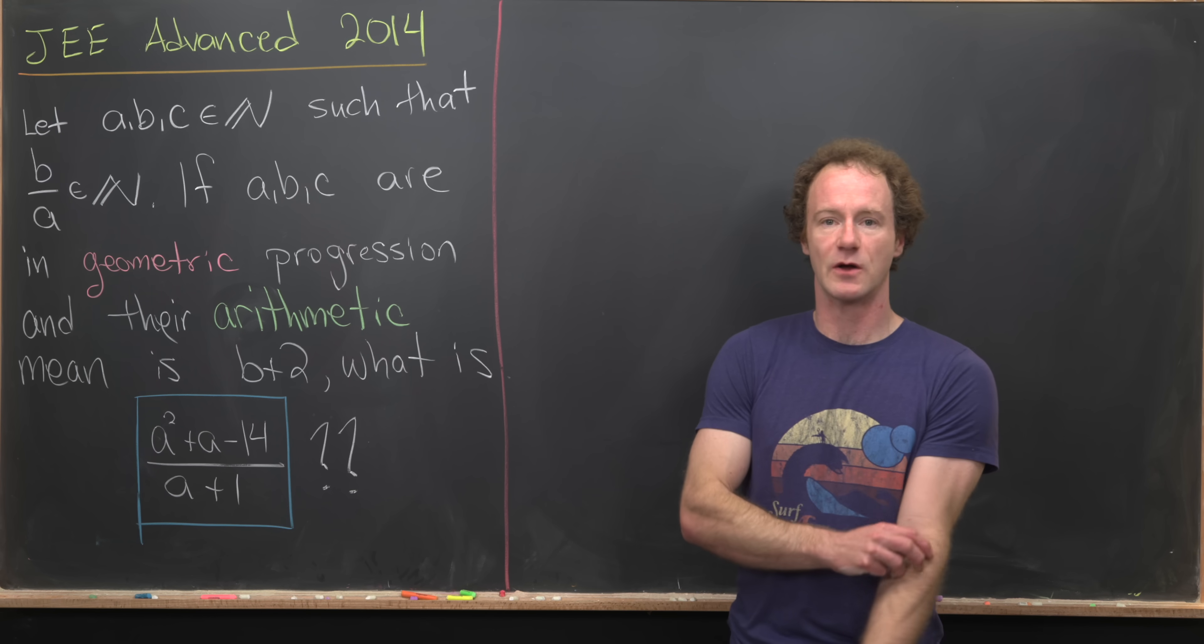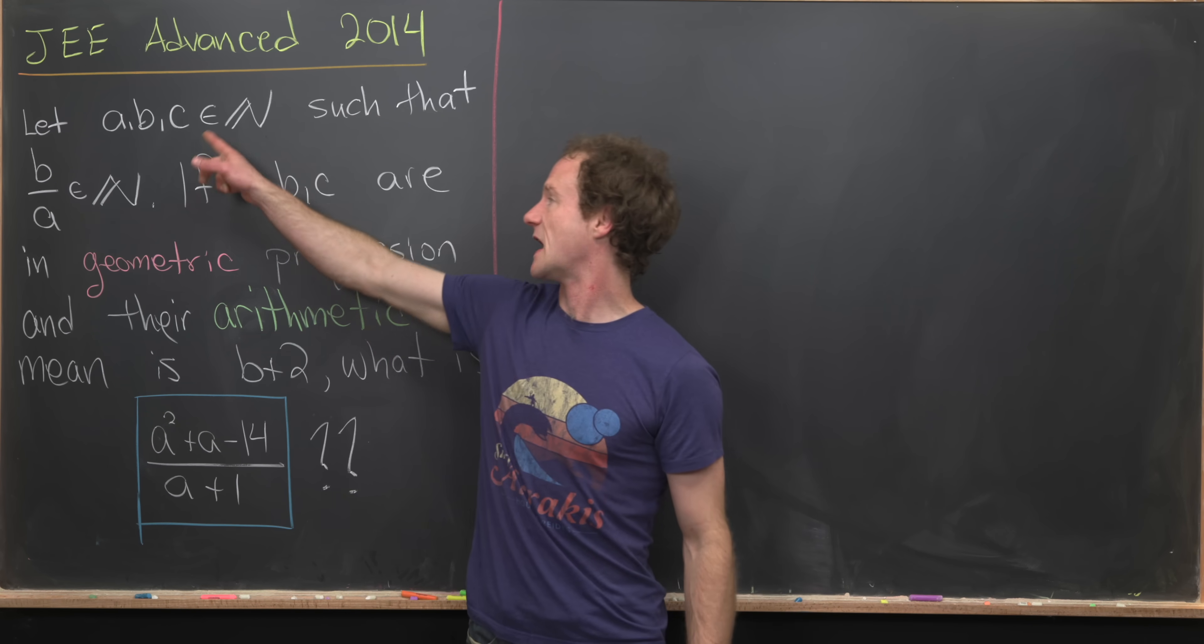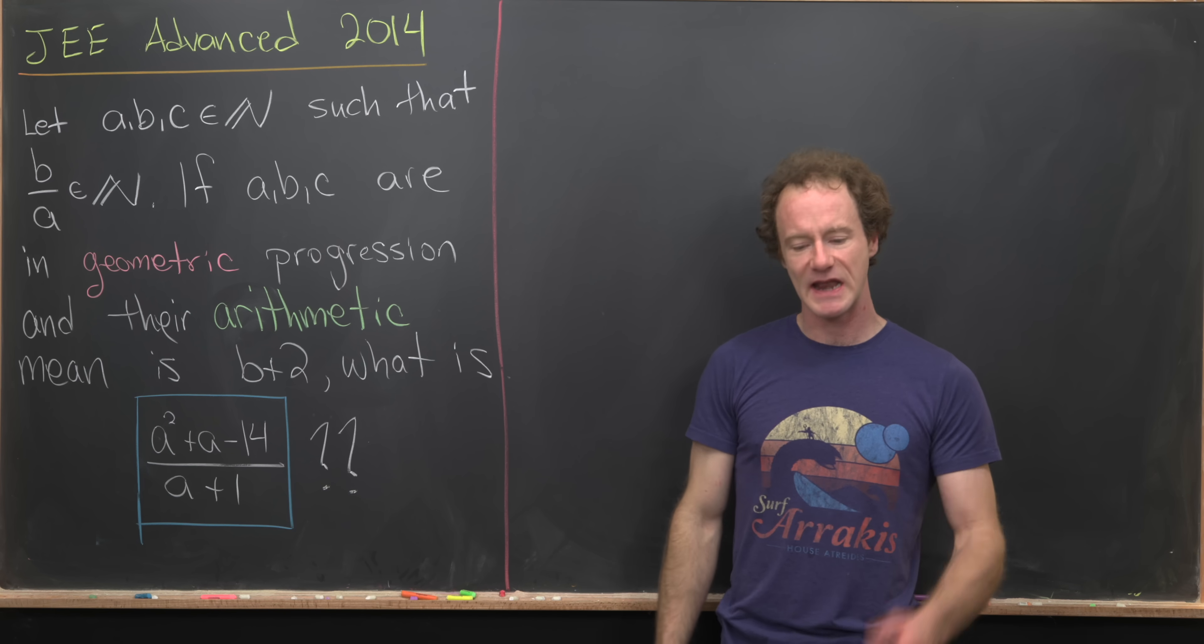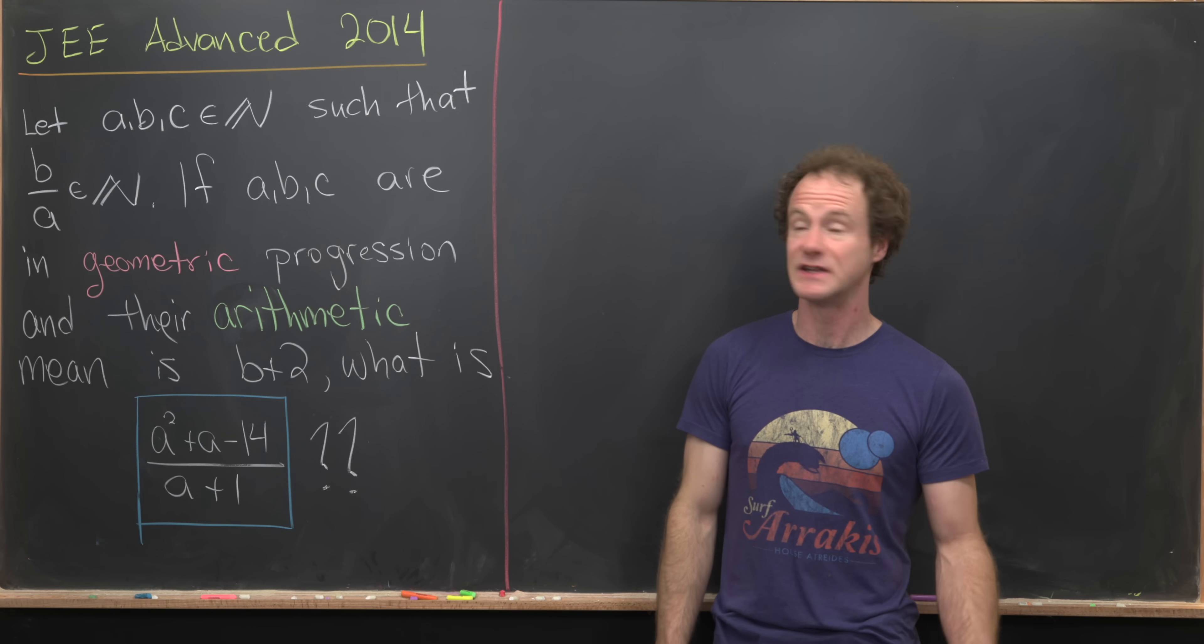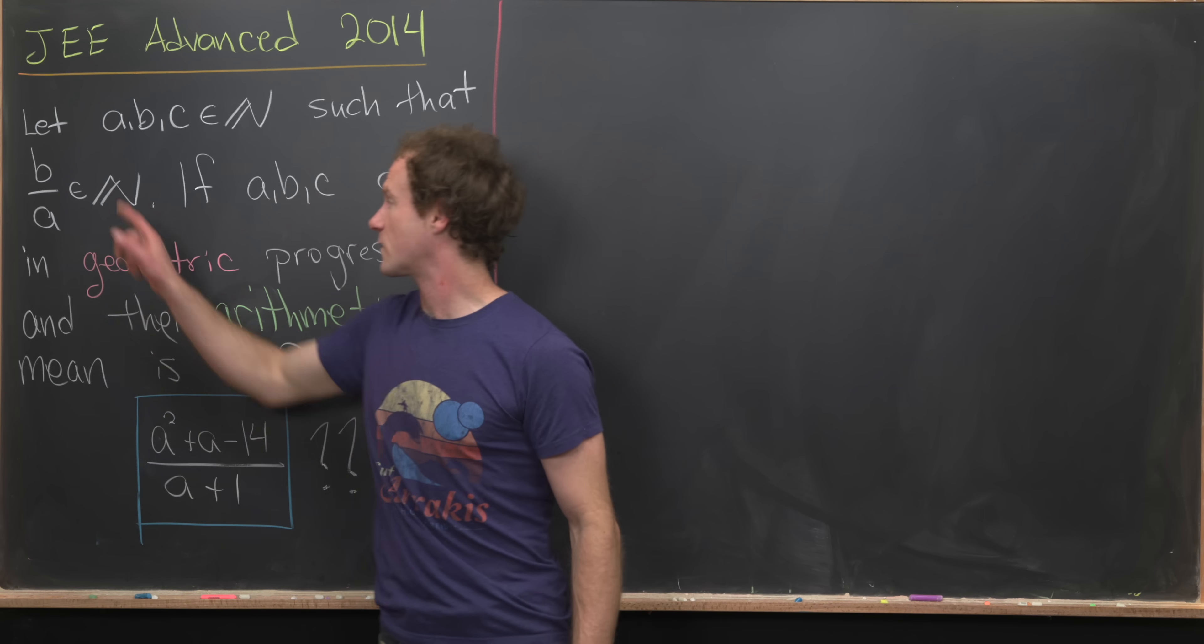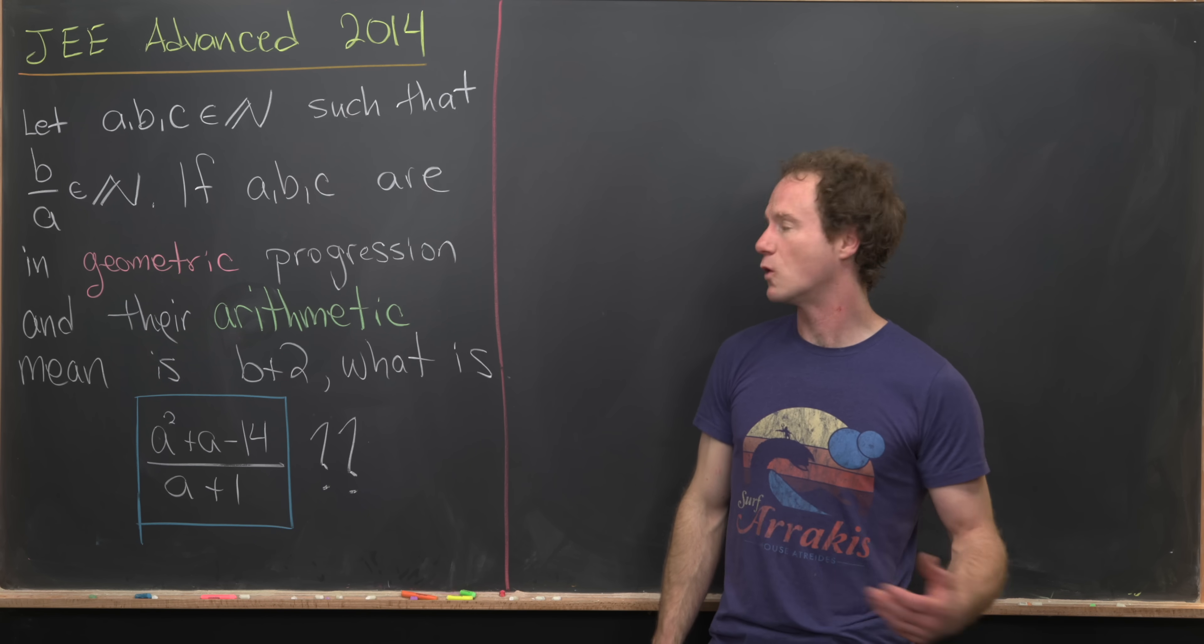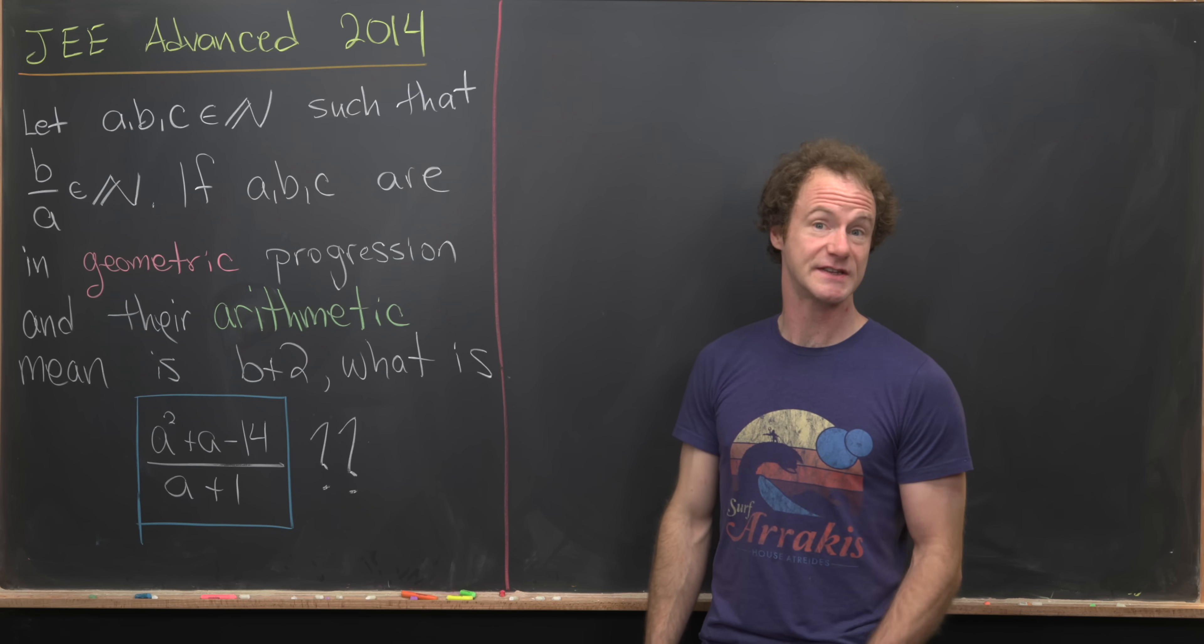So let's see what we've got going on here. We want to say that we've got natural numbers A, B, and C. And by natural numbers, I mean positive integers. And they satisfy this rule that B over A is also a natural number. So in other words, we say that A divides B or B is a multiple of A.